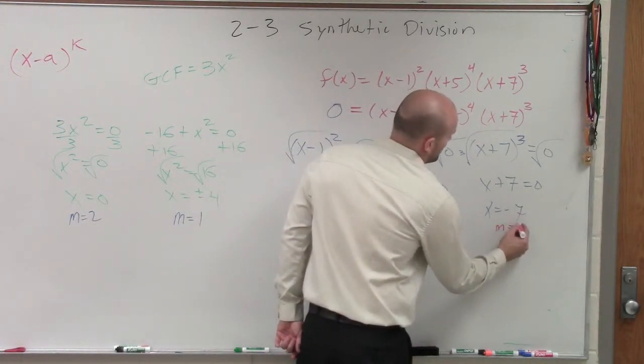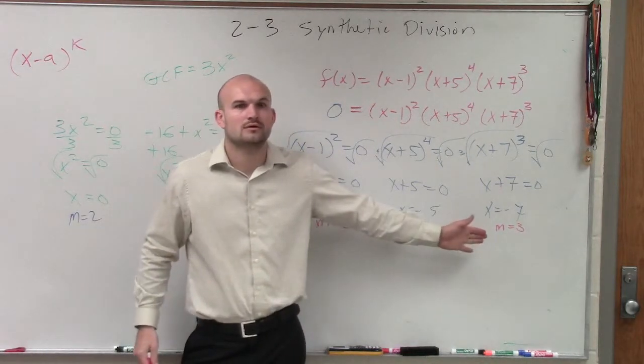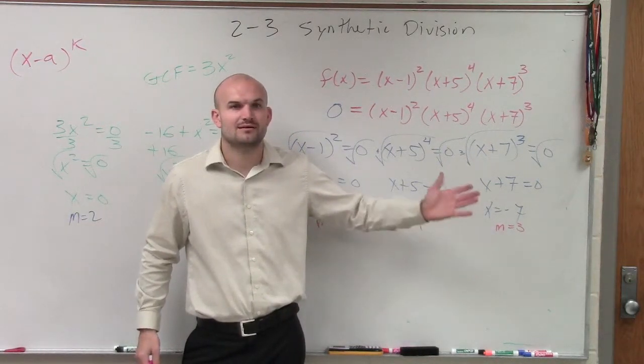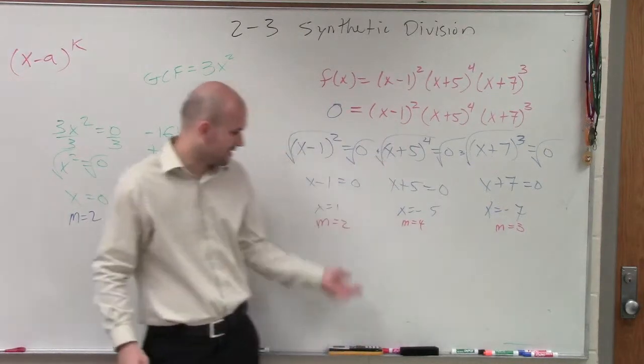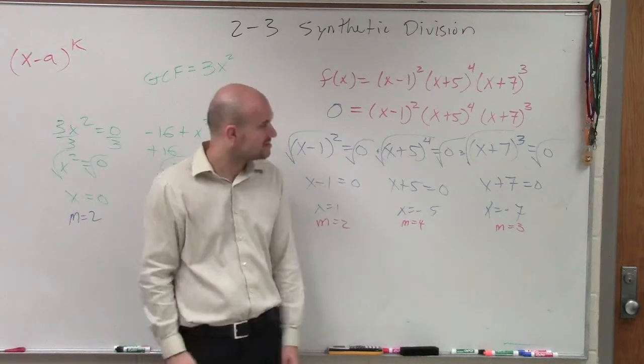And what do we know about when we have a multiplicity that's odd? We know that the graph is going to, what happens when it's odd? It crosses. That's exactly right. And when we have an even multiplicity of the graph? Touches.